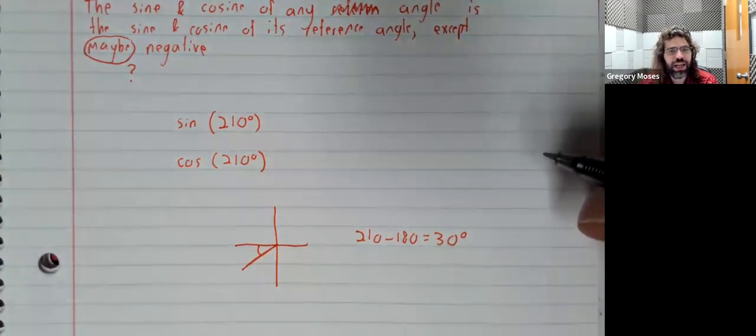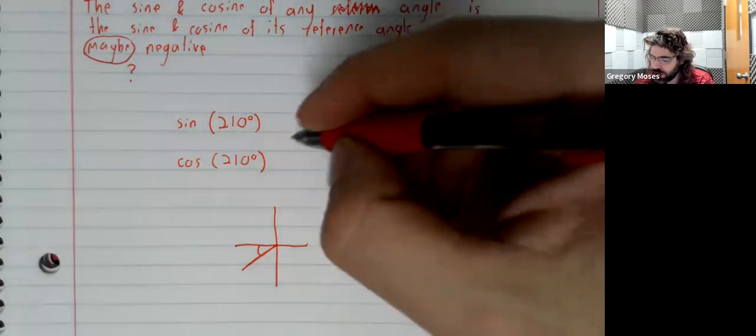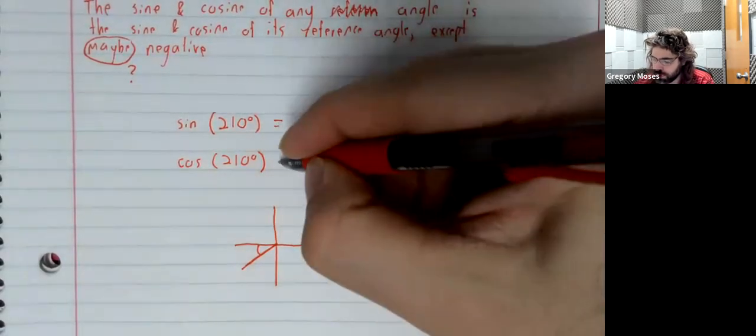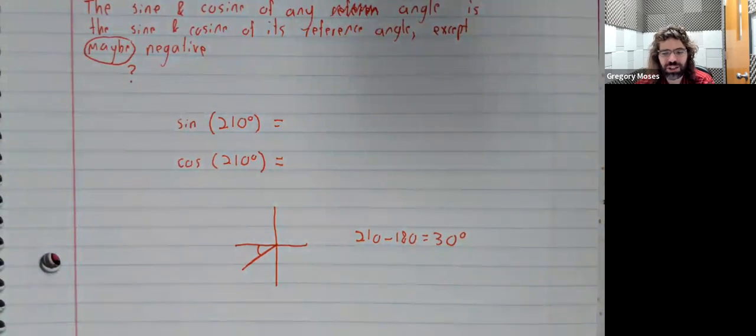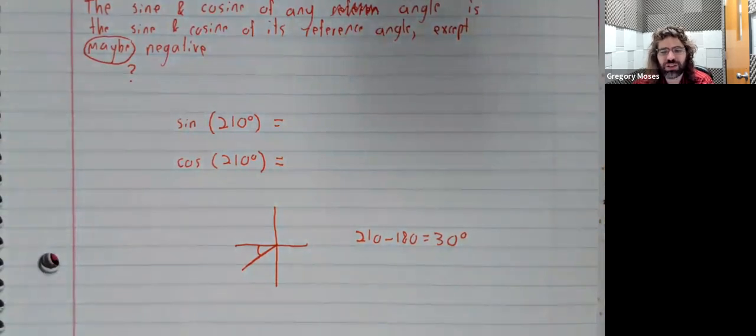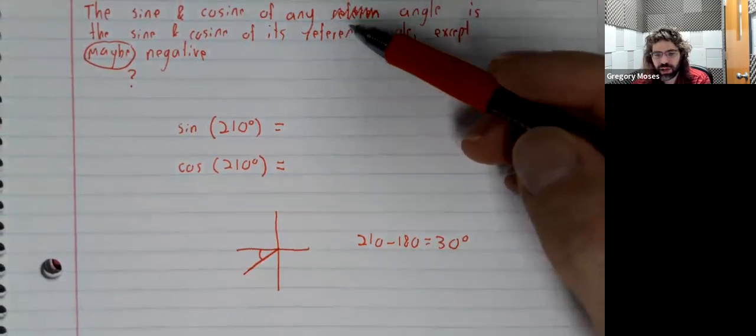And the sine and the cosine of 30 degrees we know. I'm going to write some equalities, and only one of these equalities is true. The other is false, but bear with me for a moment. According to what I have up here,